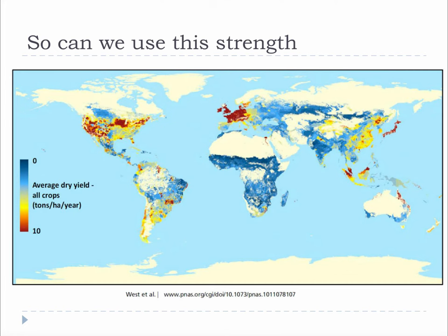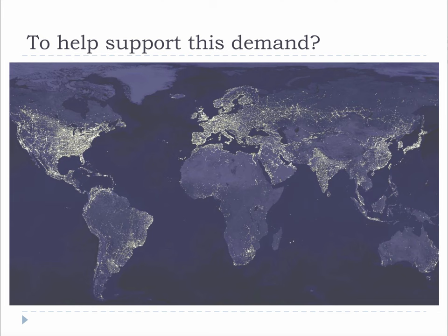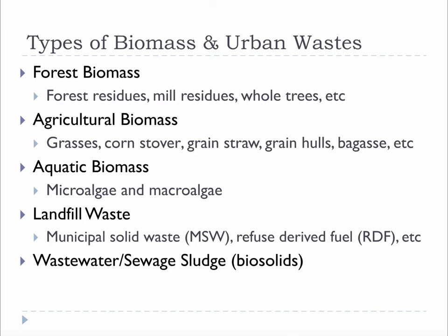Here is the map of agricultural productivity again. The real question is: can the areas with high productivity use that strength to support the demand of the areas that are utilizing the most energy? Pictures of the earth at night are a very good way to get a feeling for where most of our energy consumption is occurring. It is very interesting that the areas of energy consumption overlap so well with the areas of intense agricultural productivity.